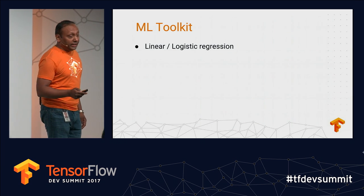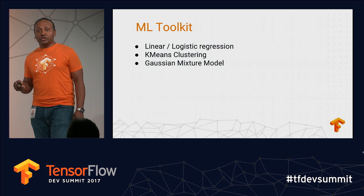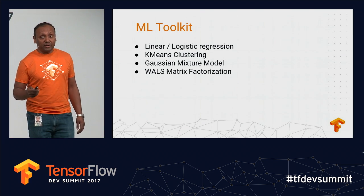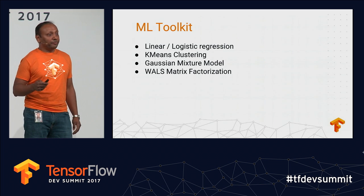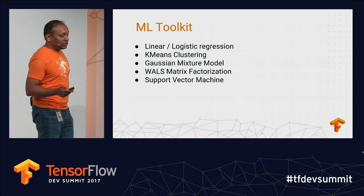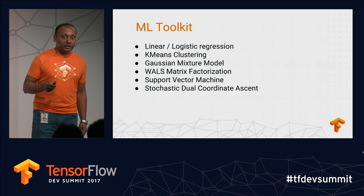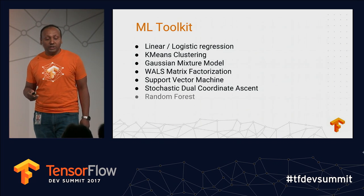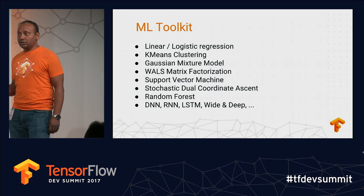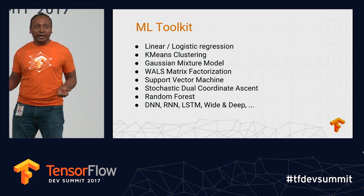Starting with logistic regression, k-means and Gaussian mixture models for unsupervised clustering, WALS matrix factorization — a popular collaborative filtering algorithm for recommender systems — support vector machines, all the way to state-of-the-art algorithms like SDCA (stochastic dual-coordinate ascent) for convex optimization, random forests and decision trees, and various architectures of deep networks. All these are available on GitHub, and we are constantly working on improving and expanding the set.